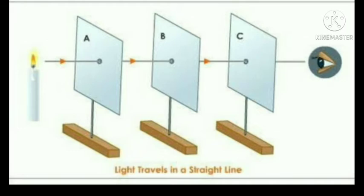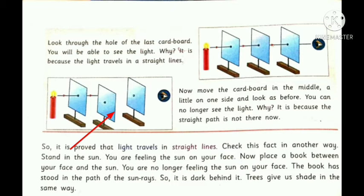Now, you have to look through the hole of the other cardboards. Are you able to see the light? Yes, we are able to see the light, because the light rays from the candle passes through the holes in straight lines. Now, what we have to do is just move the middle cardboard a little on one side and look as before. Are you able to see the light? No, we are unable to see the light because the straight path is not followed here. The rays of the light is blocked by the cardboard. This proves that light always travels in the straight lines.